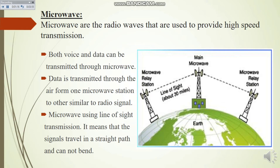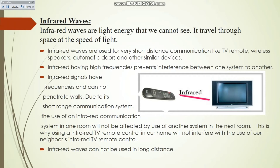Next is infrared waves. Infrared waves are light energy that we cannot see — they travel through space at the speed of light. Infrared waves are used for very short distance communication, like TV remotes, wireless speakers, automatic doors, and other similar devices. You can see this figure showing the TV and remote, demonstrating very short distance communication.